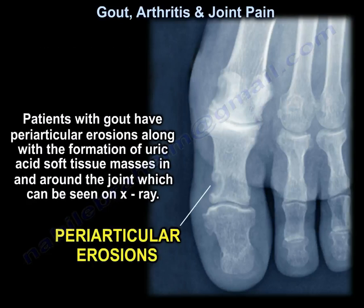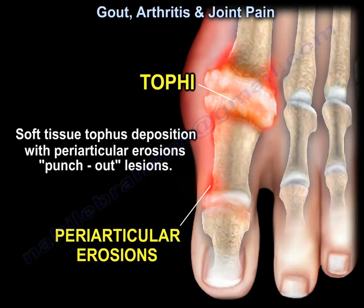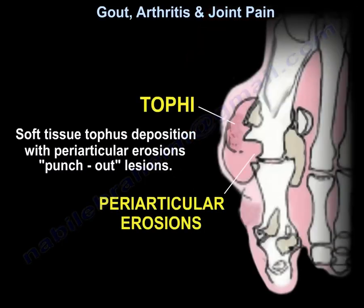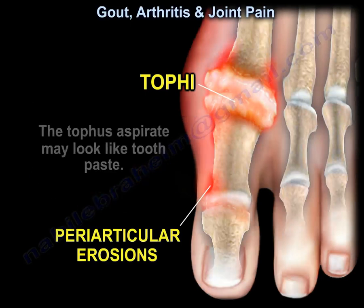You can see here the periarticular erosions. Patients with gout have periarticular erosions along with the formation of uric acid soft tissue masses in and around the joint, which can be seen on x-rays. You can also see tophi in addition to the periarticular erosions — soft tissue tophus deposition with periarticular erosion punch-out lesions. The tophi occur due to deposition of uric acid crystals, and the tophus aspirate may look like toothpaste.